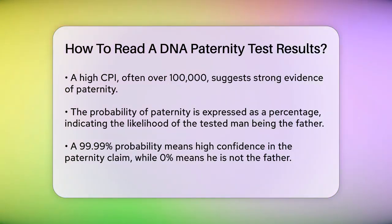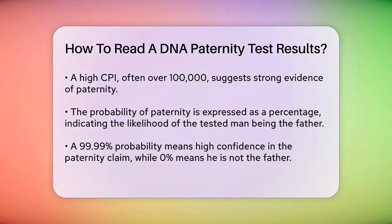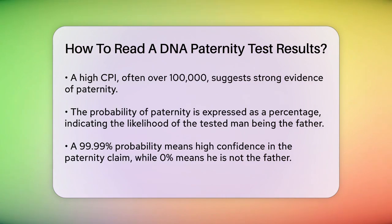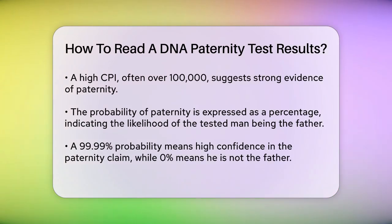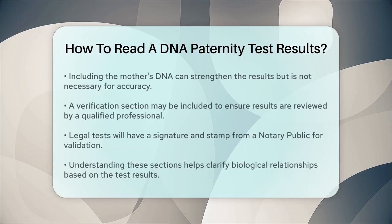A high CPI, often exceeding 100,000, along with a probability of paternity of 99.99% or higher, is considered strong evidence of paternity. The probability of paternity is expressed as a percentage and indicates how likely it is that the tested man is the biological father. If this percentage is 99.99%, the test is very confident he is the father. If it's 0%, it means he is not the father.